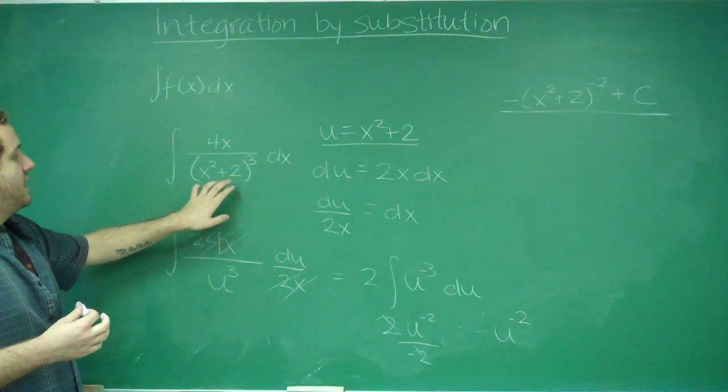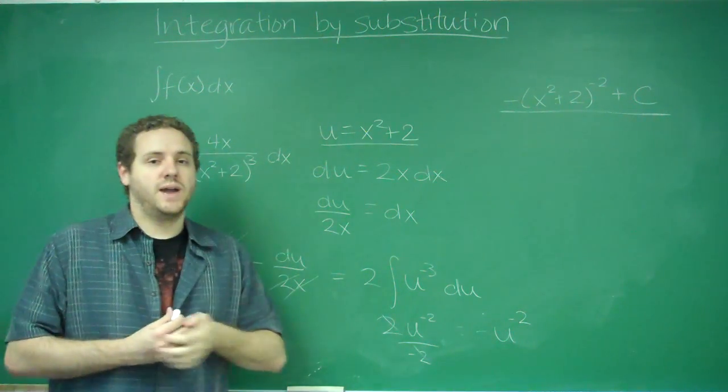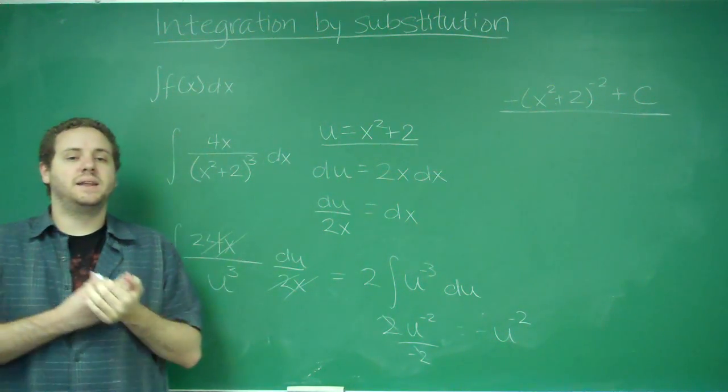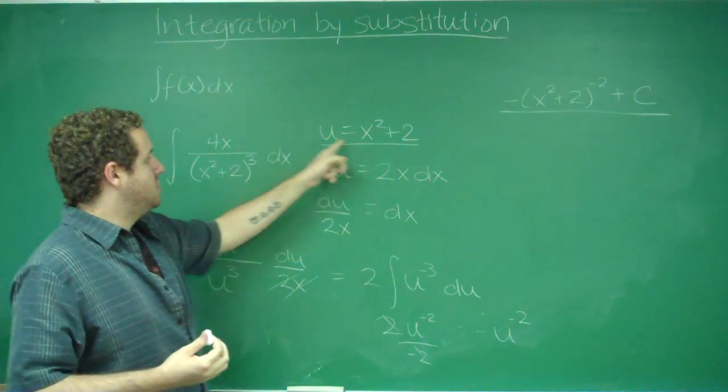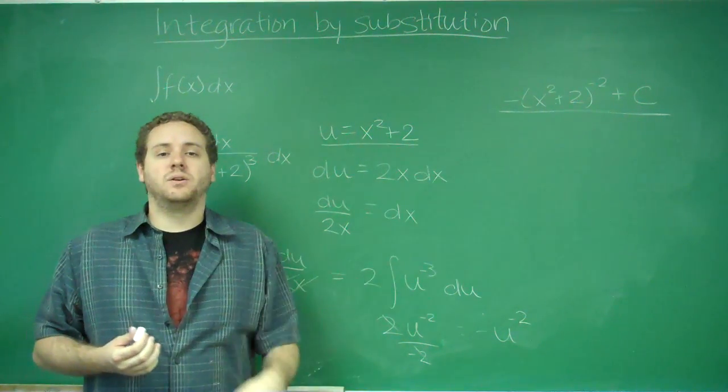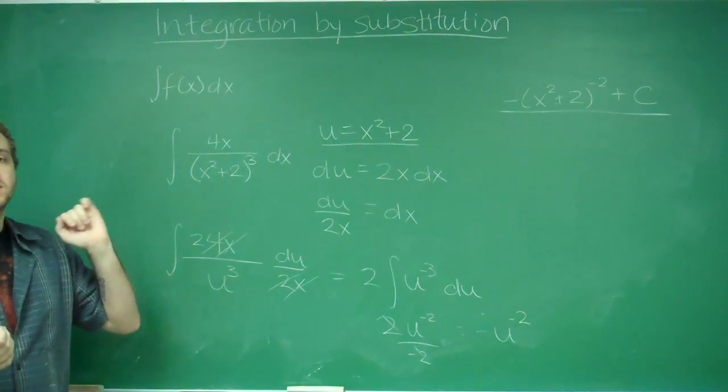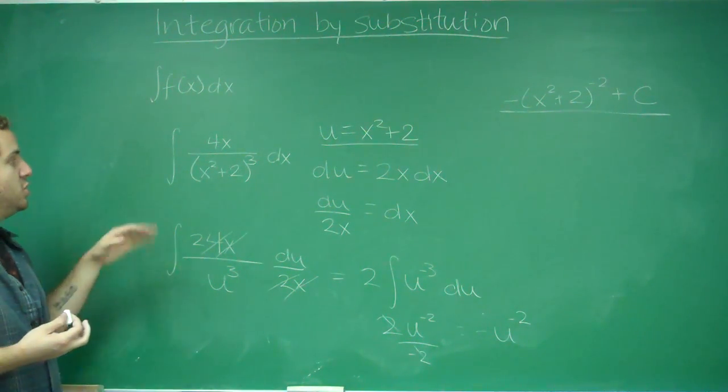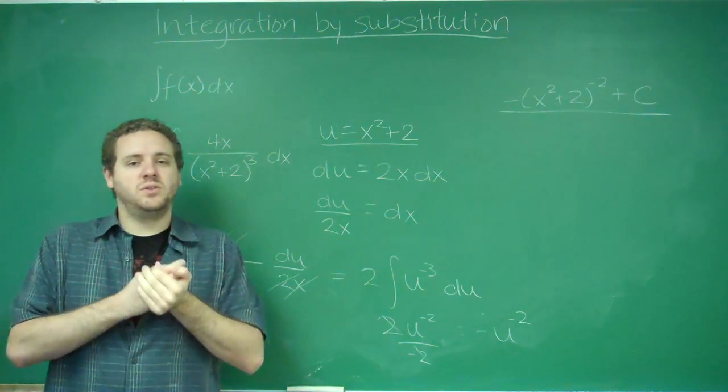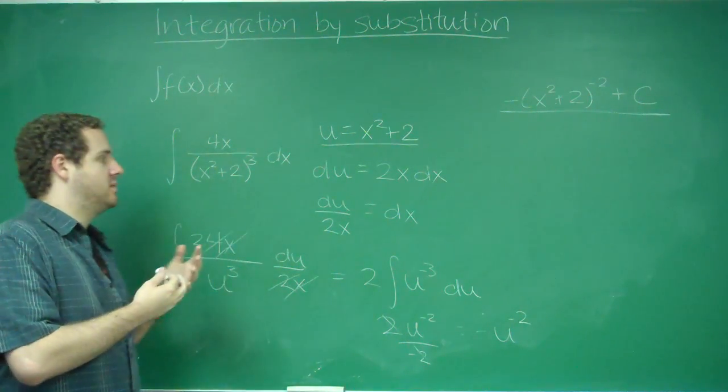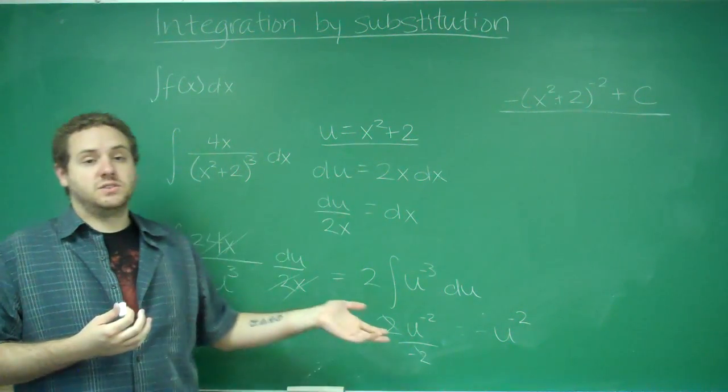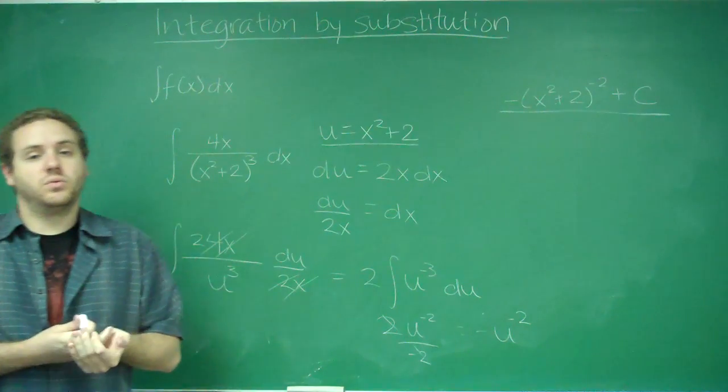You should always, if anything is added or subtracted, you should always combine that into the u, because when you do the derivative, it's never going to matter. If it was plus 1 or plus 3 or plus 5 or minus 100, it doesn't matter. You should always include that in with the u, because it will not matter, essentially, because the derivative won't do anything.